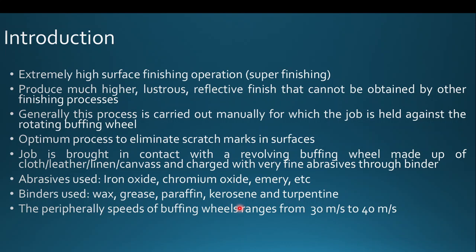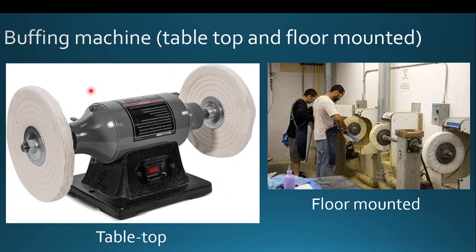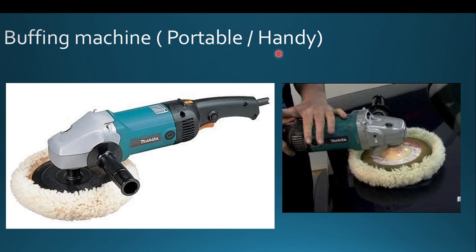The rotating speed of the buffing wheel ranges from 30 to 40 meters per second — very high rotation. Buffing wheels are not made of ceramic or metallic material; they are made of leather, cloth, linen, or canvas in various shapes. Buffing machines can be table-top or floor-mounted. A double-head buffing machine loaded with two wheels is also available, as well as portable handheld buffing machines.